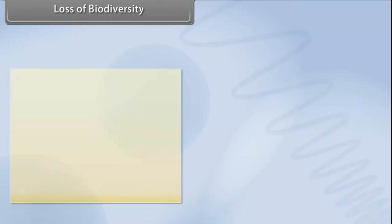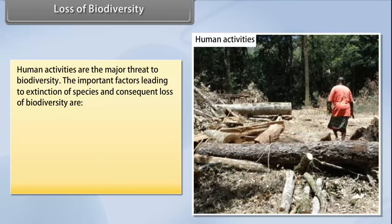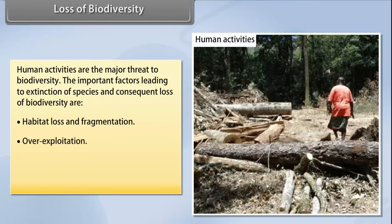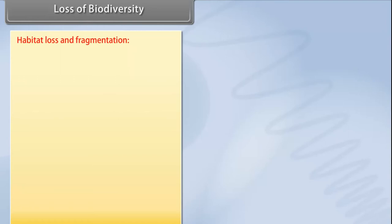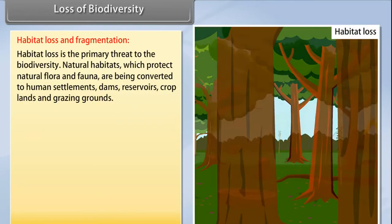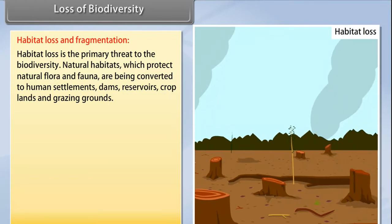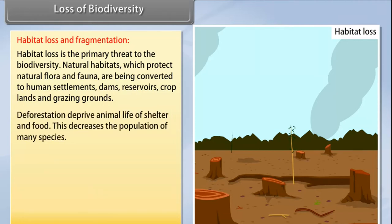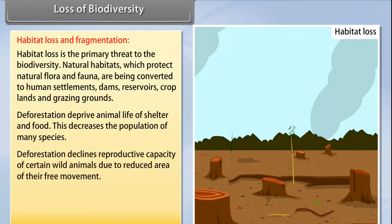Human activities are the major threat to biodiversity. The important factors leading to extinction of species and consequent loss of biodiversity are habitat loss and fragmentation, over-exploitation, alien species invasions, and co-extinctions. Habitat loss is the primary threat to biodiversity. Natural habitats are being converted to human settlements, dams, reservoirs, croplands, and grazing grounds. Deforestation deprives animal life of shelter and food, decreasing the population of many species and declining the reproductive capacity of certain wild animals.